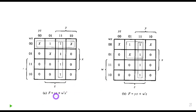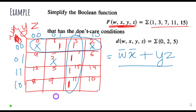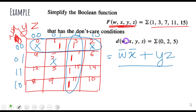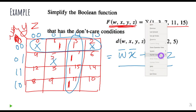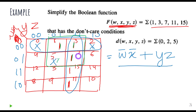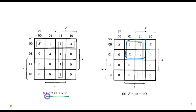There is also an alternative grouping: I could have made a different group of four here using the ones and this don't care condition. Both representations are correct — both answers are valid, and you can go with either. This circuit has two simplified forms, and the overall logic and output remains the same either way. Let me know if you have any questions.